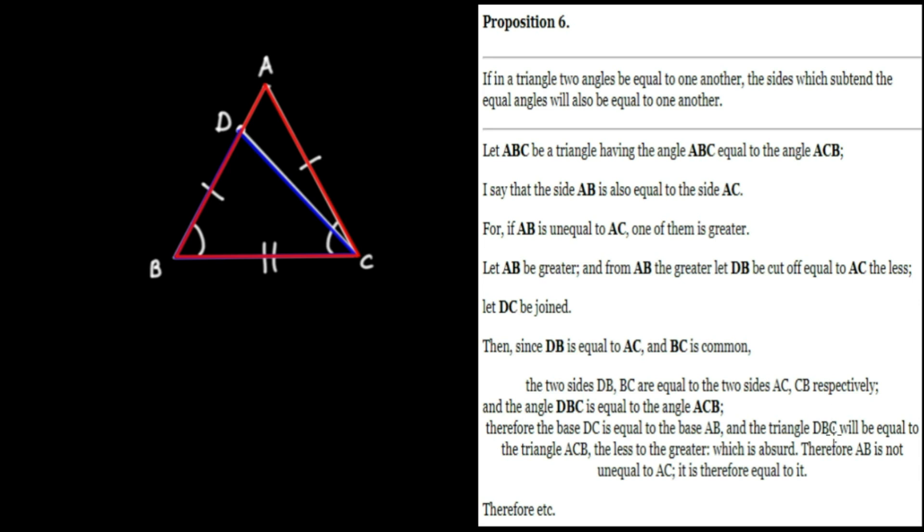And our conclusion, since our supposition led to an absurdity, therefore, AB is not unequal to AC. And therefore, AB is equal to AC. And the triangle in question is isosceles, which is what we aimed to demonstrate.